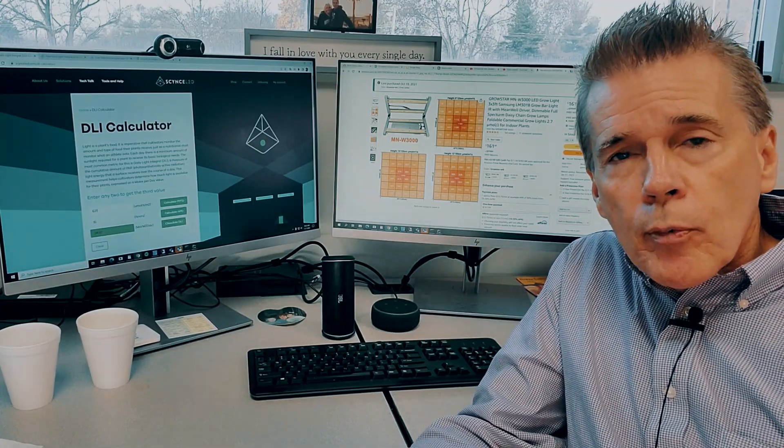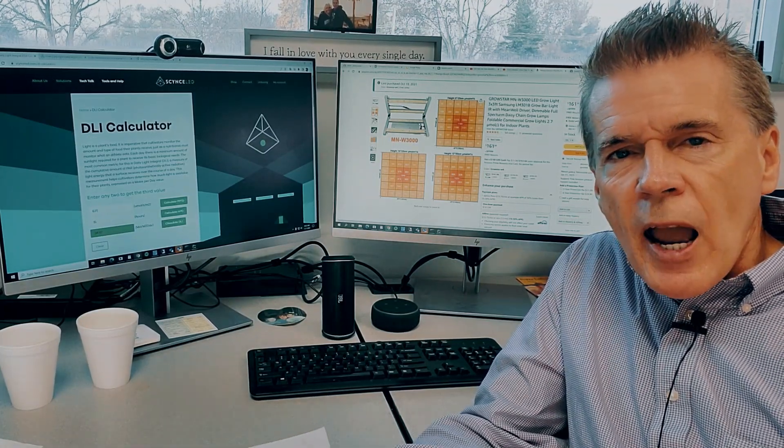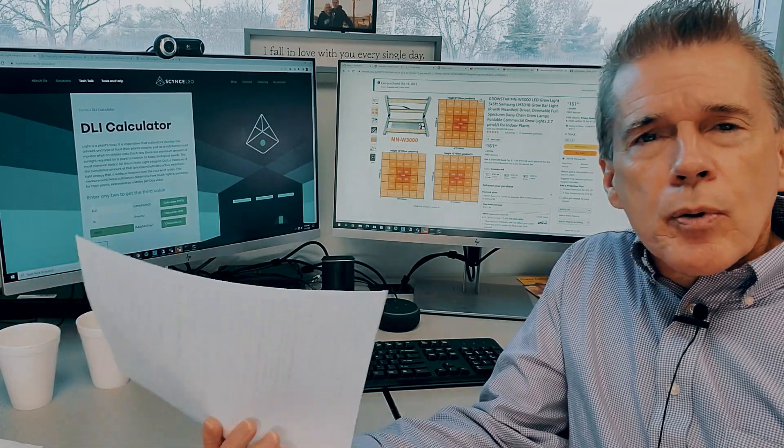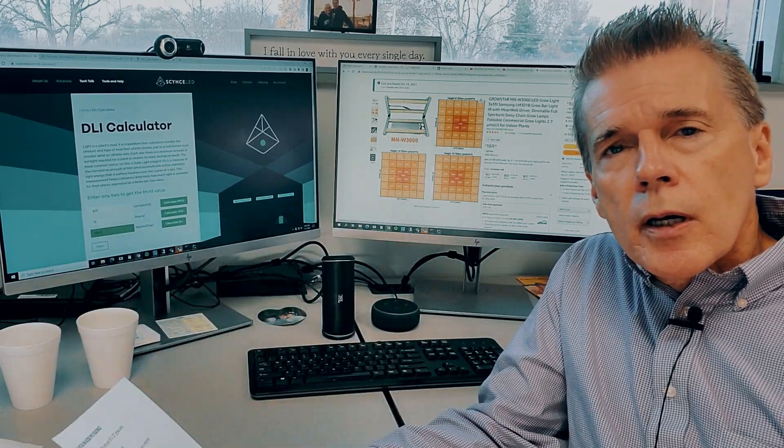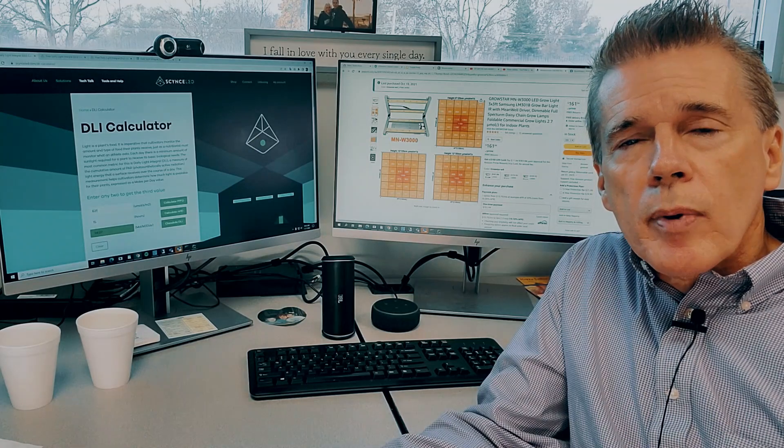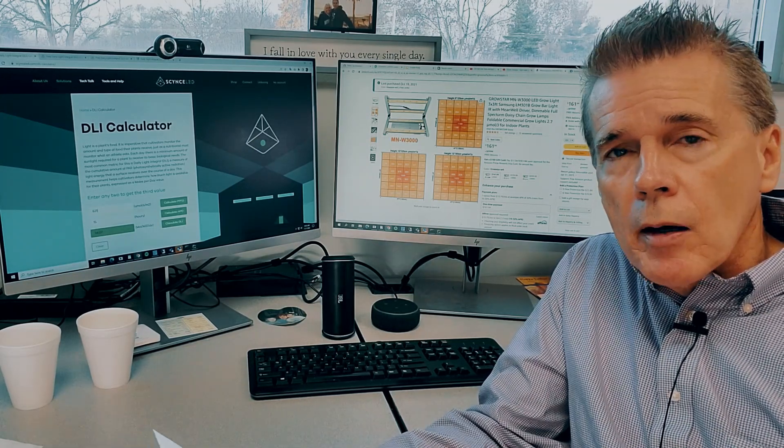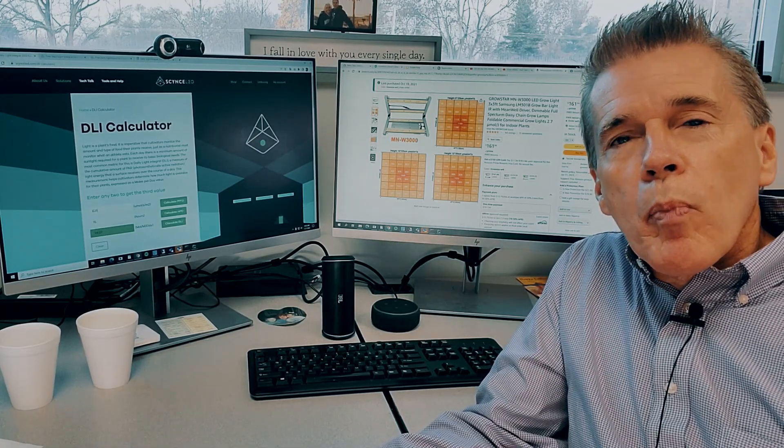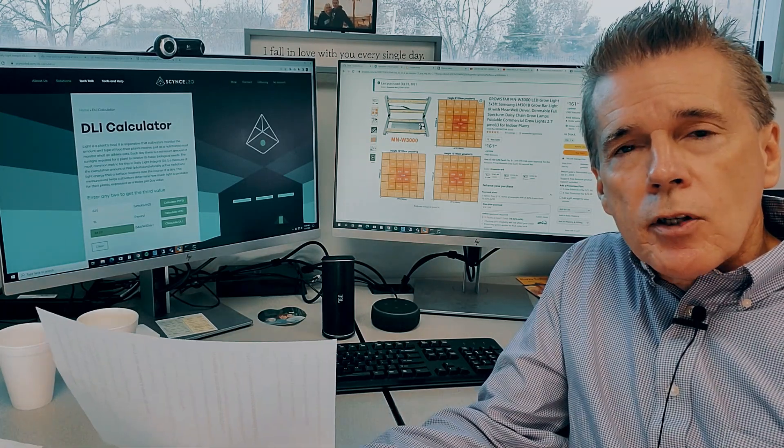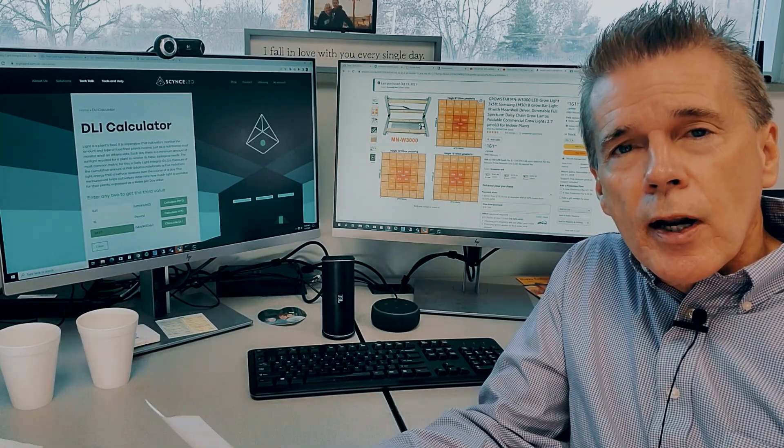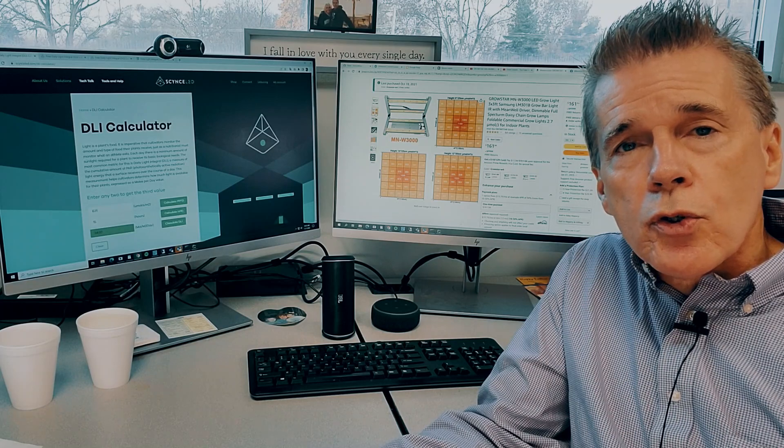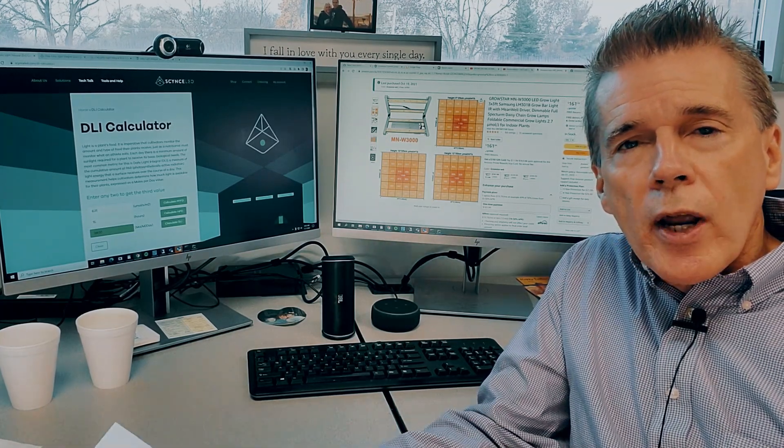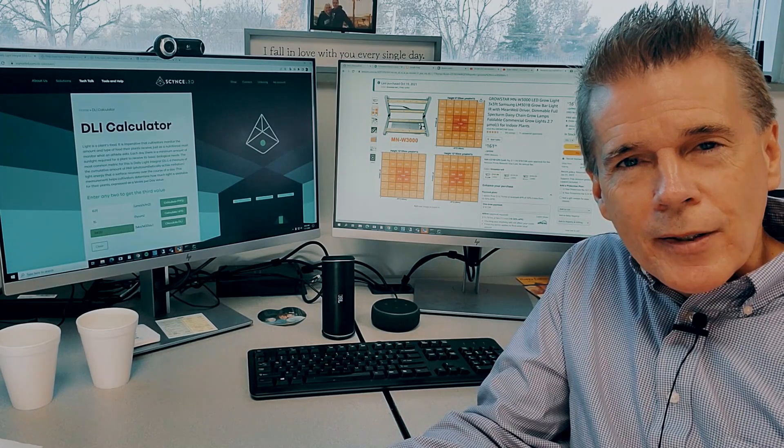Most plants prefer a dark period of four to six hours. Examples of lesser light loving plants would be lettuce and microgreens. But you'll notice that I can dial back the hours that I run that light I just showed you to eight hours and be right in the range that's ideal for those plants.